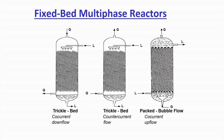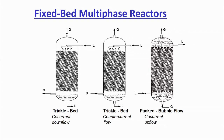Changing the contacting pattern — co-current versus counter-current — results in entirely different mixing and contacting patterns, which can produce entirely different reaction results. Just a small change in contacting changes the overall operating efficiency. We need to understand these contacting patterns, and by changing reactor type and contacting pattern, how the flow pattern inside differs.